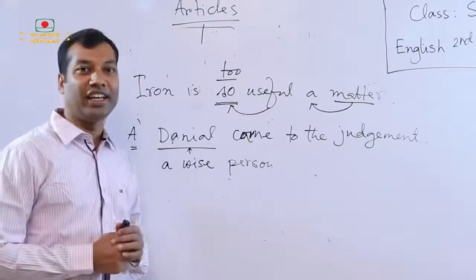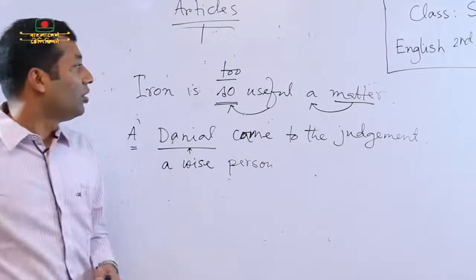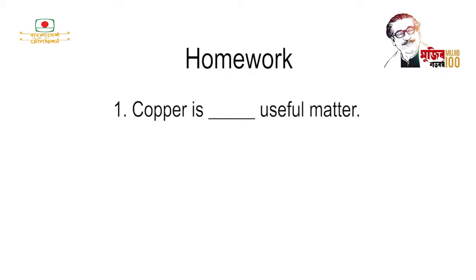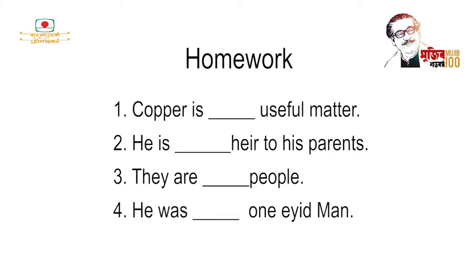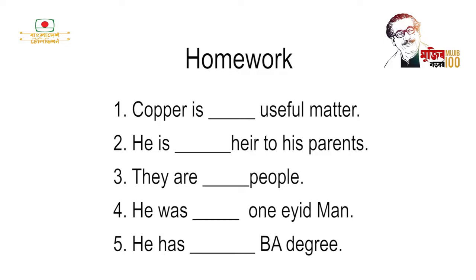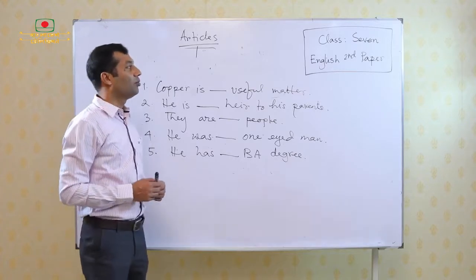This is all about the use of indefinite articles — the use of A and AN. And we now know where to use the article A and where to use the article AN from our discussion. So let me give you some homework. Number one: copper is dash useful matter. Number two: he is dash heir to his parents. Number three: they are dash people. Number four: he was dash one man. Number five: he has dash BA degree. These are the homework. You must do the homework at home. And after reopening of your school, you must have it checked by your subject teacher because the marks will be added as part of your continuous assessment. So at the very end, I am thanking all of you.